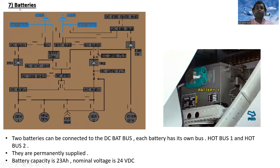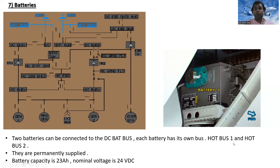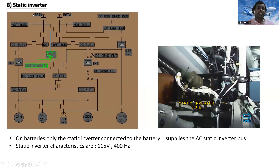There are two batteries — battery one and battery two. Both batteries can be connected to the DC battery bus. Each battery has its own hot bus: hot bus one and hot bus two. These are permanently supplied. Battery capacity is 23 ampere-hours with a nominal voltage of 24 volts DC.